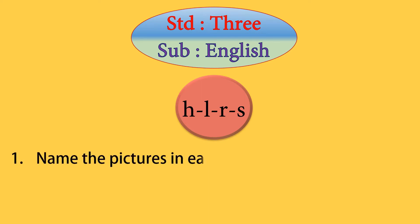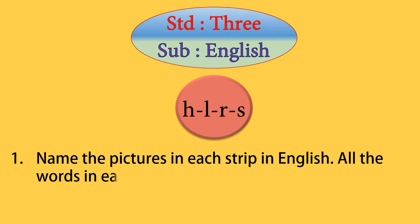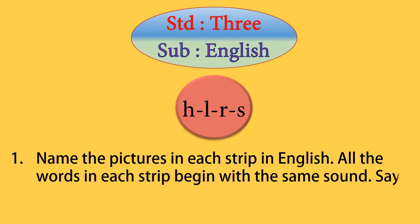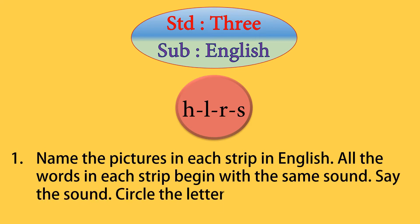The question is: Name the pictures in each strip in English. All the words in each strip begin with the same sound. Say the sound and circle the letter that shows the sound. इसका मतलब है, हर सत्तर की तस्वीरों के नाम अंग्रेजी में बोलो। हर सत्तर के अल्फाज़ एक ही आवाज़ से शुरू होते हैं। वो आवाज़ तलाश करो और उस आवाज़ के हर्फ के गिर्द दायरा बनाओ।